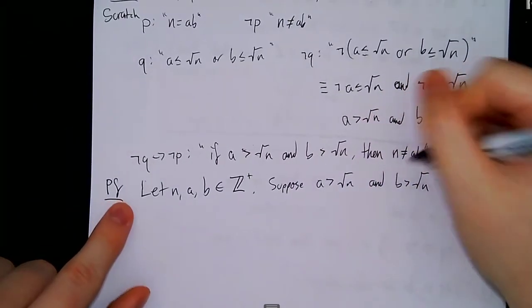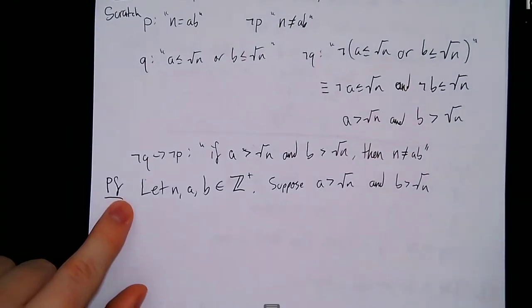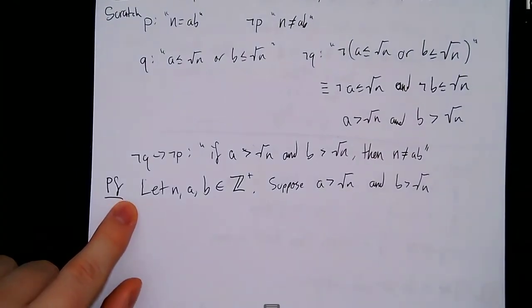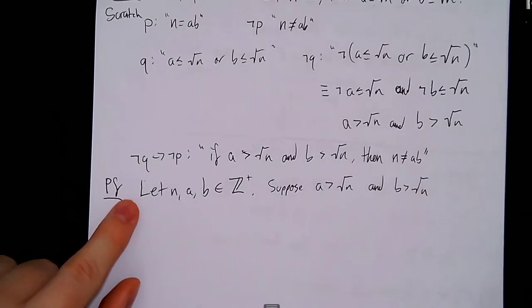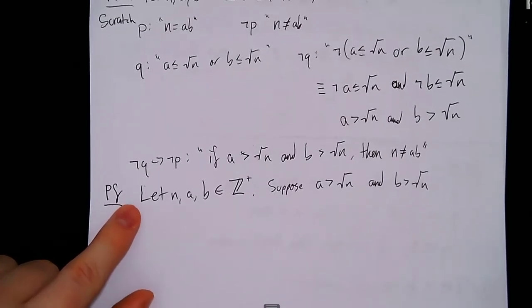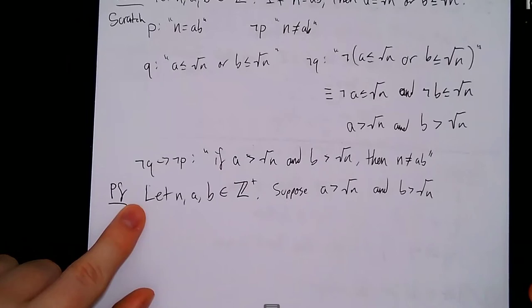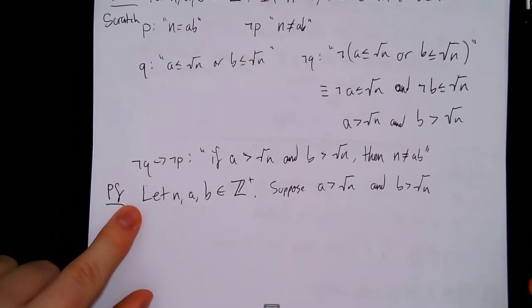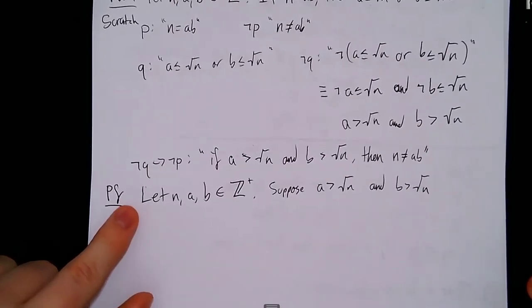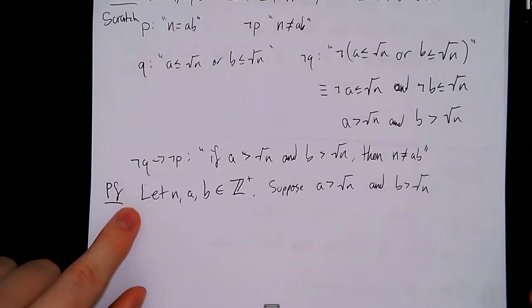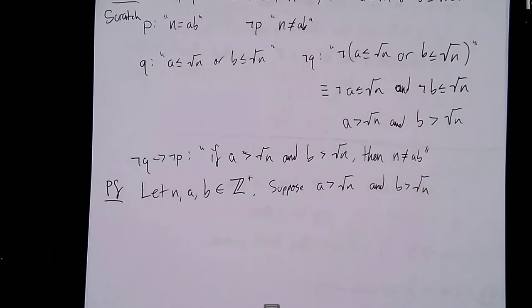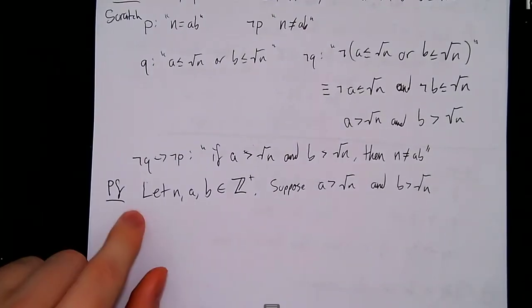You'll notice I didn't put 'contrapositive' here — I completely forgot. It's not strictly necessary, but it can be helpful to keep track of, or to be clear to the reader what type of proof you're doing. Normally I like to include it. So as long as you state it at some point — at the very least at the bottom of the proof — that's fine.